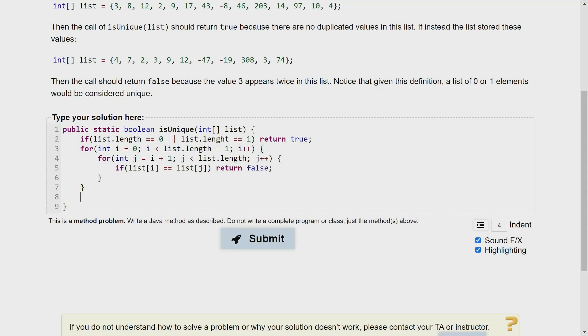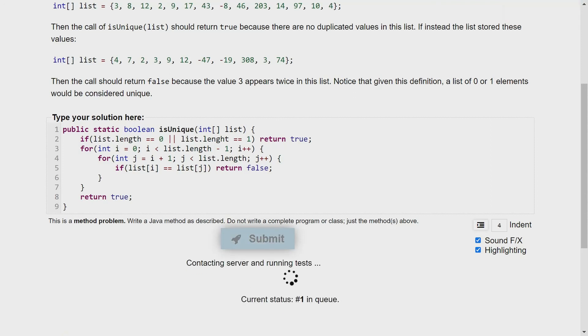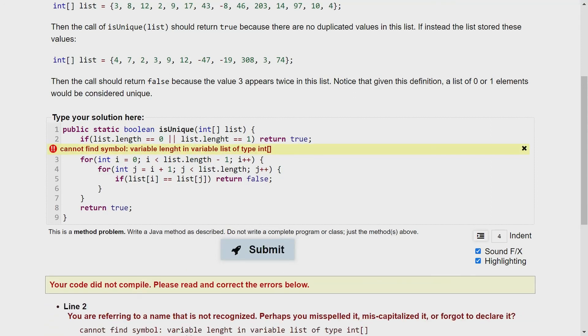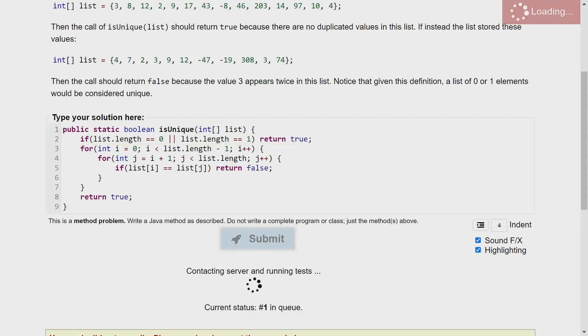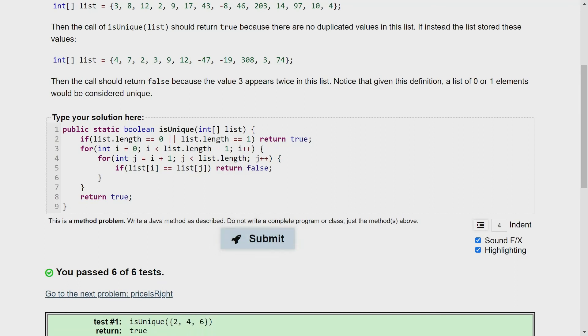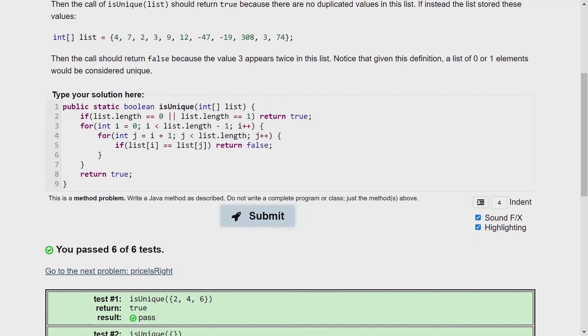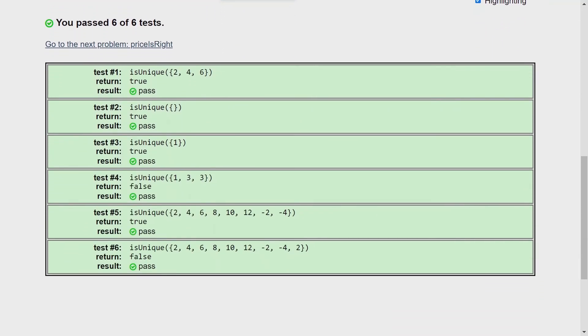But let's say that our program went all the way to the end without returning false. Then we know that we only have unique values, in which case we would return true. And if we try submitting... oops, looks like I misspelled length, so let's go ahead and change that. And you'll notice once I fix the spelling of length and we scroll down, we get all of our tests passed.